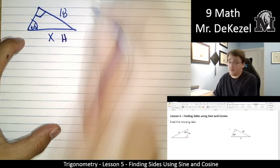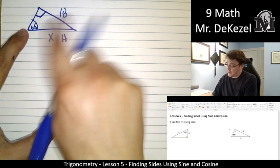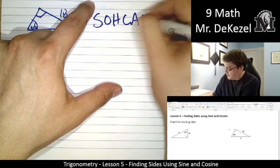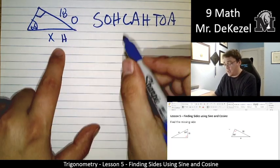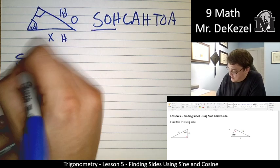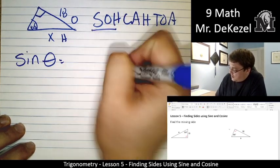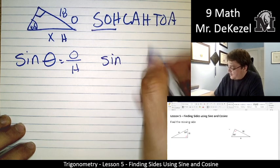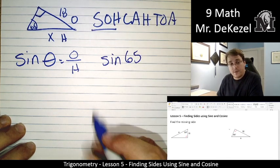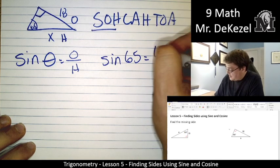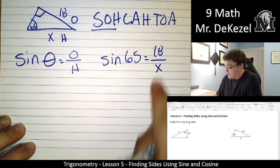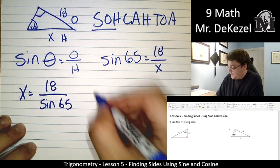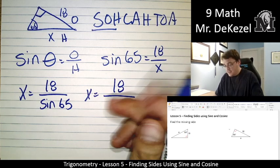Across from the right angle is going to be the hypotenuse, and then across from our angle of interest is the opposite side. So that means that we have the opposite and the hypotenuse side that we're interested in, so that would be sine. So sine of theta is equal to opposite over hypotenuse. Our angle of interest is 18, and our unknown hypotenuse is x. So we can switch those two around. x is equal to 18 divided by the sine of 65.